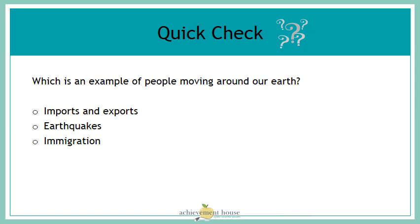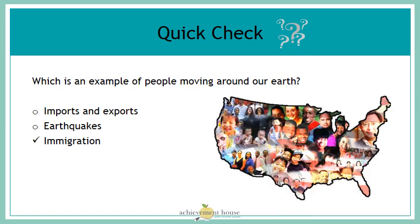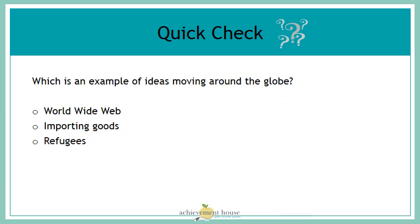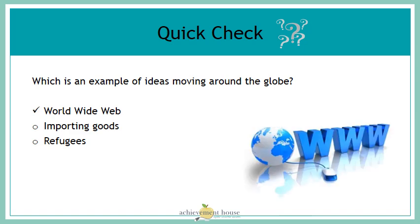Let's do a quick check. Which is an example of people moving around our earth? Imports and exports, earthquakes, or immigration? Immigration is an example of how people move around our earth. Which is an example of ideas moving around the globe? The World Wide Web? Importing goods? Refugees? The World Wide Web is an example of how we share ideas around our globe.